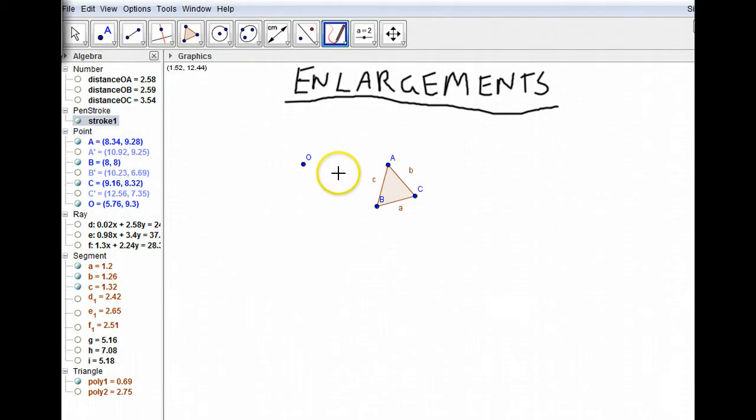Okay, so in this video we're looking at something called enlargements. Basically, we're going to take a shape - it's usually a triangle in the questions we're going to be doing - and we're going to make an exact copy of it, only bigger. Really straightforward. To do that, we're going to use a geometric technique. Let's take a look at how it works.